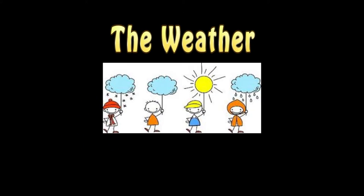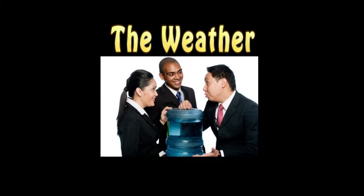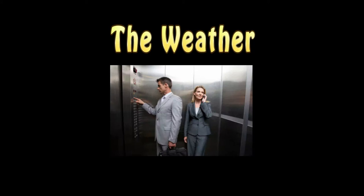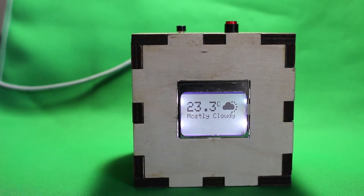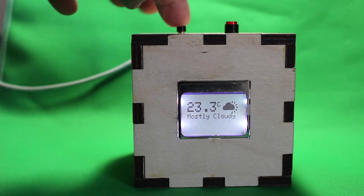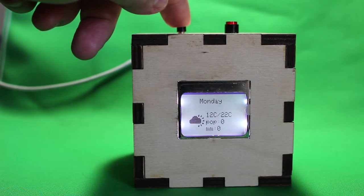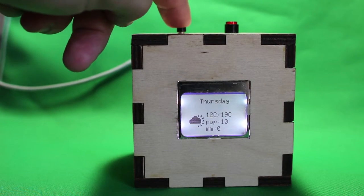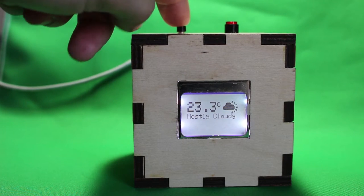The most talked about thing in the Western world is the weather. We talk about it at the water cooler, at the bus stop and even in elevators. Well now you can build your own Internet of Things WeatherCube. It gives you the current conditions and forecasts the weather up to 4 days.